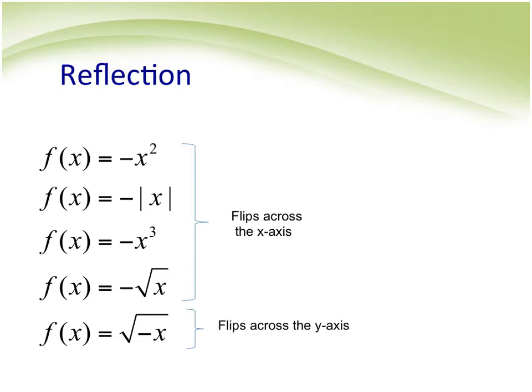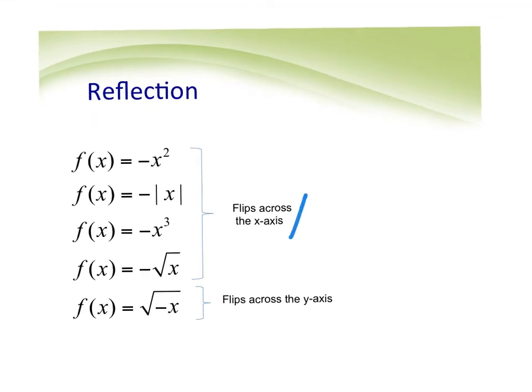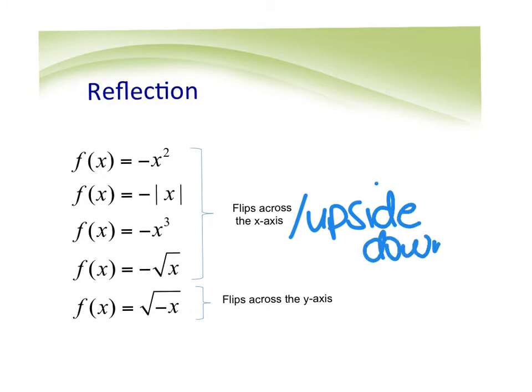Then there's reflection. If the negative is on the front of the function, it flips it across the x-axis — flips it upside down. So the U parabola flips upside down, the V flips upside down, the cubic function instead of going up-right and down-left would go up-left and down-right, and the square root instead of pointing up and right would point down and right.